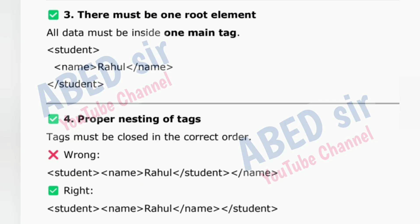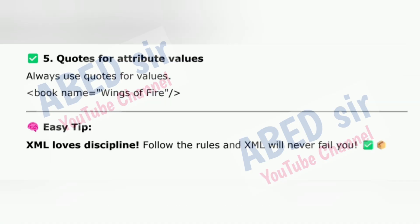Rule three: There must be one root element — all data must be inside one main tag, e.g., Student, Name Rahul /Name, /Student. Rule four: Proper nesting of tags — tags must be closed in the correct order. Wrong: Student Name Rahul /Student /Name. Right: Student Name Rahul /Name /Student. Rule five: Quotes for attribute values — always use quotes for values, e.g., book name equals 'Wings of Fire'. Easy tip: XML loves discipline. Follow the rules and XML will never fail you.